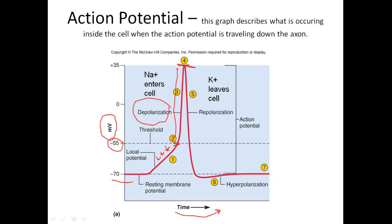The sodium voltage-gated channels close, the potassium ones are fully open, and potassium starts leaving the cell. The charge inside becomes more negative — that's repolarization. Our goal is to get back to negative 70, but we actually overshoot it, going too far down — that's called hyperpolarization. Eventually everything equalizes and we return to resting membrane potential.